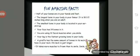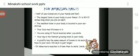Half of the bones in your body are in your hands and feet. The longest bone is the femur, and the smallest bone is located in your ear. Your face has 14 bones, and you use 12 facial muscles when you smile. Your leg is the fastest growing bone in your body. A giraffe has the same number of neck bones as you — its neck is just longer. It takes more muscles to frown than to smile, so smile!